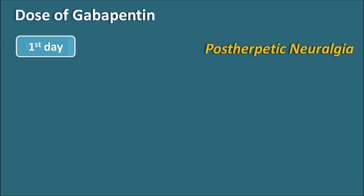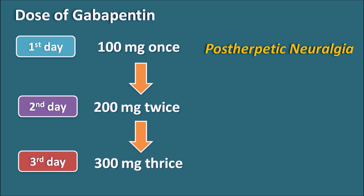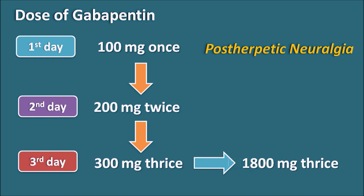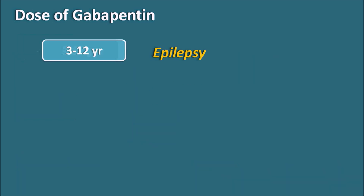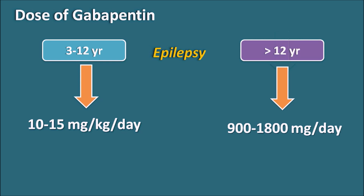The dose of Gabapentin depends on the purpose for which it is used. For post-herpetic neuralgia, on day one it is given at 100 mg once daily; on day two the dose is increased to 200 mg twice daily; and on day three it is increased to 300 mg thrice daily. The dose can be gradually increased after the third day, with a maximum of 1800 mg thrice daily. For epilepsy, children aged 3–12 years receive 10–15 mg/kg/day, while adults over 12 years receive 900–1800 mg/day, all divided into three daily doses.